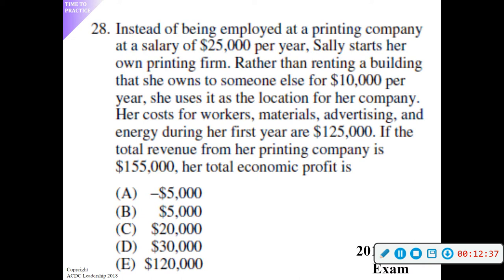Working through the second example: she's making thirty thousand in accounting profit — revenue of one hundred fifty-five thousand minus explicit costs of one hundred twenty-five thousand. She was making twenty-five thousand at her previous job, so that's an implicit cost. She also owns the building she's using, and she could rent it out for ten thousand a year but isn't — so that's another ten thousand in implicit cost, totaling thirty-five thousand.